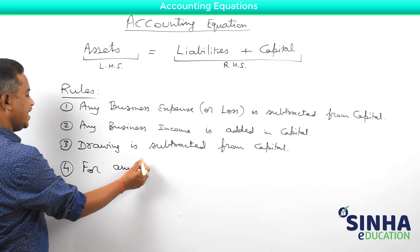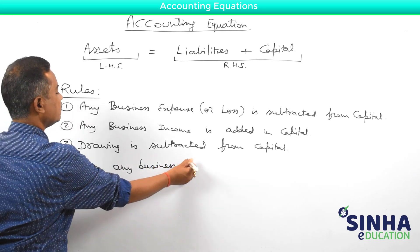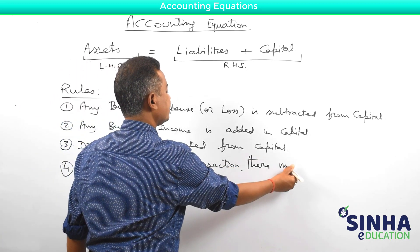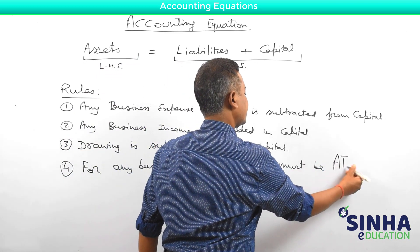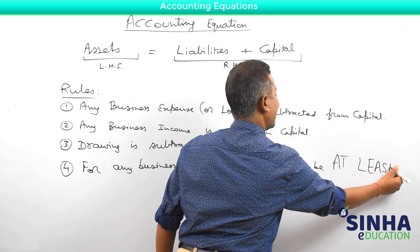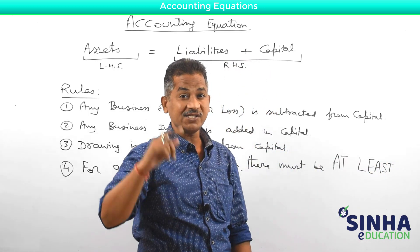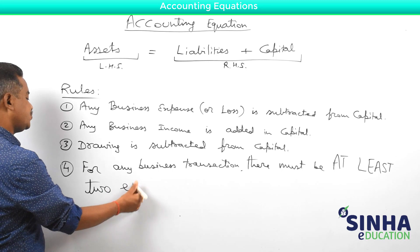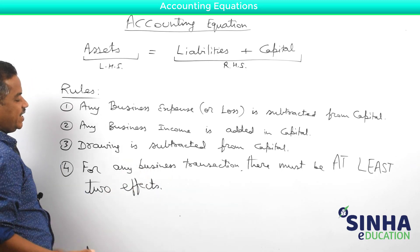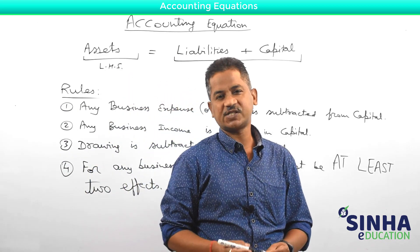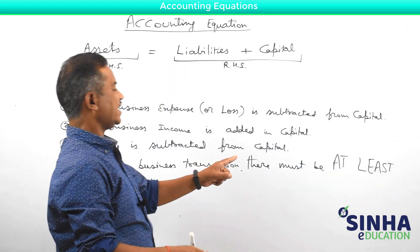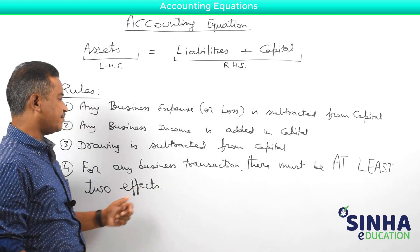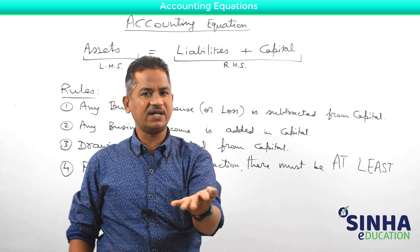Rule four: for any business transaction, there must be at least two effects in this mathematical equation. Each and every transaction must produce at least two effects.